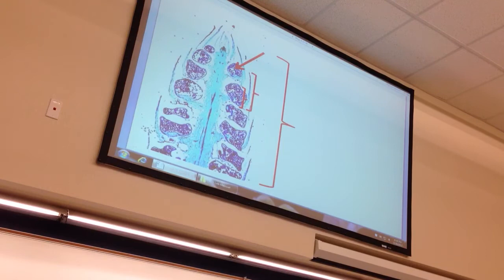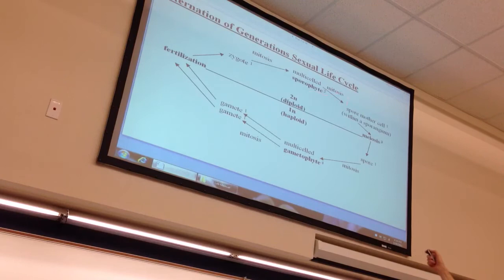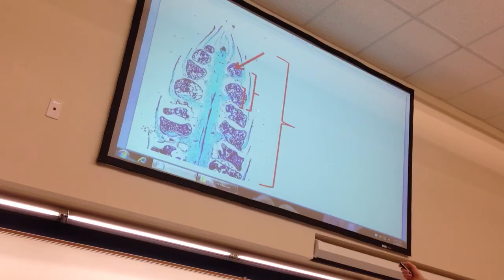I have a question. So on that cycle, the 2N is for the spore mother? This is diploid, so it's spore mother cell. And then this was a sporophyll. Sporophyll is a leaf that produces spores. Was there a question on this?